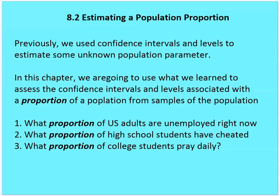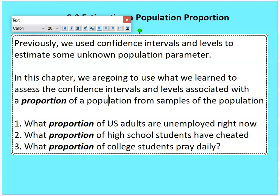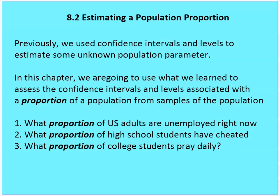The parameter could be mean or standard deviation. We called that the parameter, and the sample value of that parameter the statistic. In this chapter, we're going to focus on what we learned with confidence intervals and associate it with the parameter of the proportion of the population. Some examples might be: what proportion of U.S. adults are unemployed right now, what proportion of high school students have cheated, what proportion of college students pray daily.